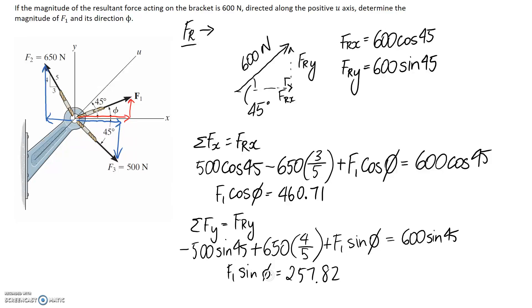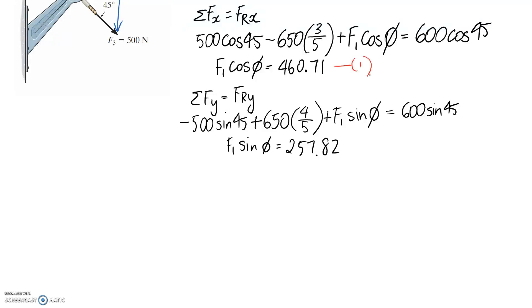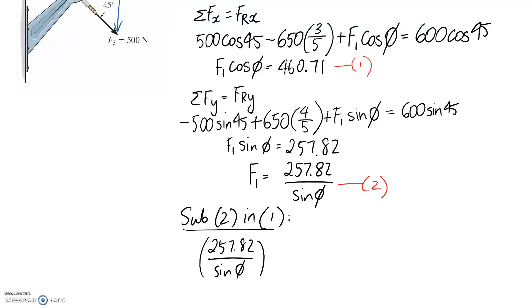Now we have two equations with the same two unknowns, so we can solve them simultaneously. I'll rearrange equation 2 to get F1 = 257.82 divided by sin phi, then substitute that into equation 1. This gives us (257.82 / sin phi) times cos phi = 460.71. A useful identity here is that sin divided by cos equals tan, which simplifies things.